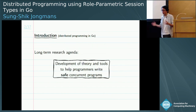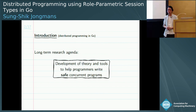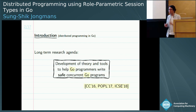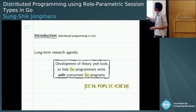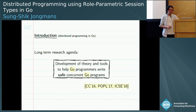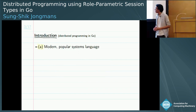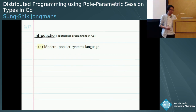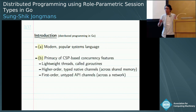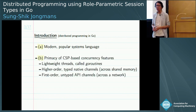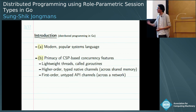Our group has been working on the development of theory and tools to help programmers write safe concurrent programs for a long time, where safety could mean, for instance, deadlock freedom. In recent years we've been applying this research in the context of the Go programming language. Go is a very interesting language for us: it's a modern popular systems language, concurrency has been one of the primary design features from its inception, and there is good support for lightweight threads and channel-based concurrency, which is very close to the formal models we've been studying.